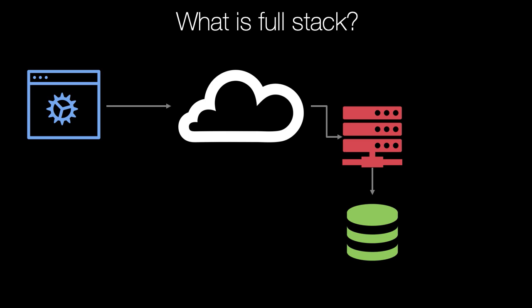What technologies do we need to know to make this happen? On the server side, we're going to use Python to run our Flask application. We're also going to write dynamic HTML templates using Jinja2, which is essentially a Python-extended version of HTML. So we need to know the Jinja language and the Flask web framework. We'll talk to a database using SQLAlchemy's ORM rather than raw SQL. We're going to deploy our code to Linux, specifically Ubuntu, with Nginx handling web stuff like HTTP/2, static files, and SSL, and uWSGI running our Python code.